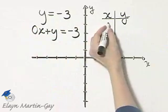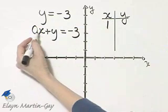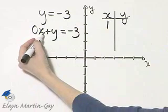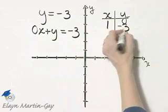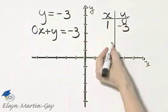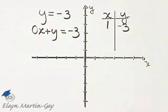No matter what value x is, for example, let's let x be 1. What is 0 times 1? Well, that's 0, so y equals negative 3. Can you see, no matter what value you let x become, y must be negative 3.